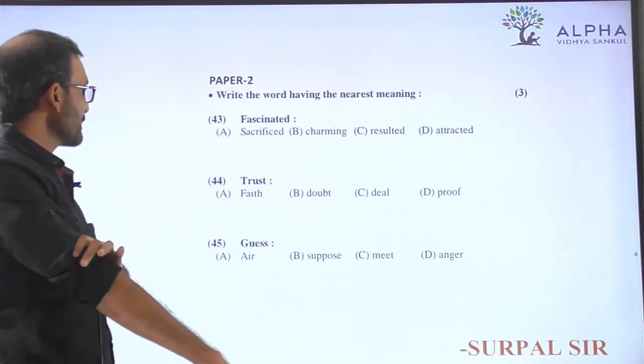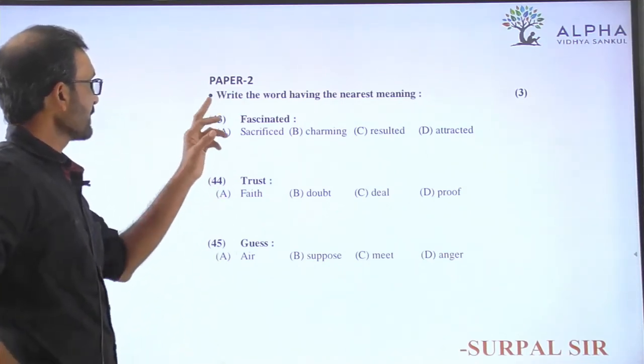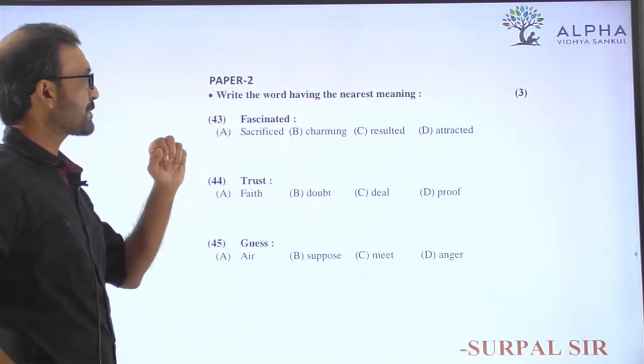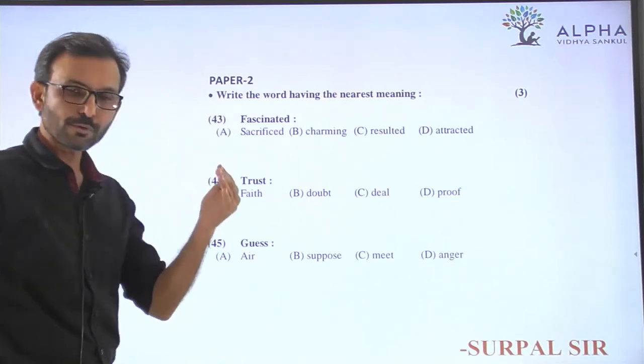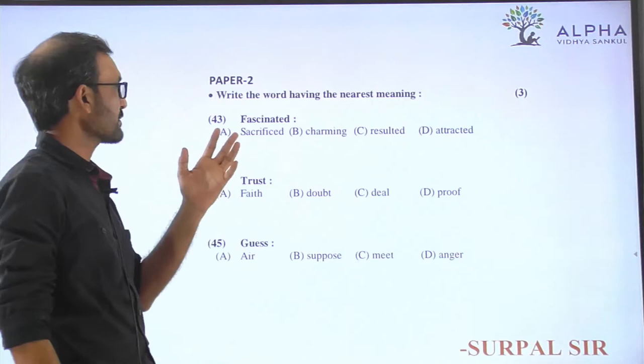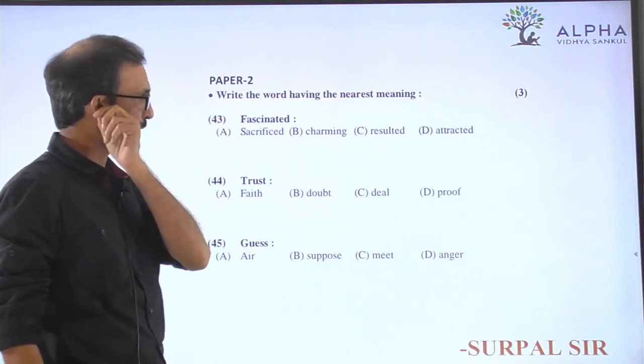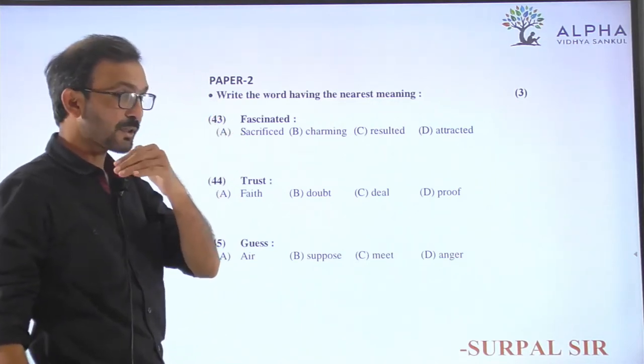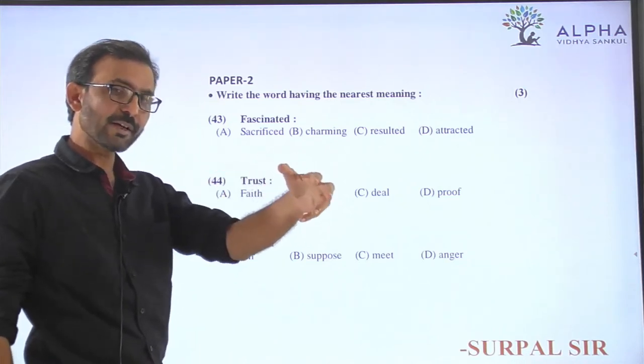Next, questions 43 to 45. Write the word having the nearest meaning, yane ke jeno najikno samanvai tato hoi. This is synonym form, yane ke total saman arthi hoi, total synonym pa na hoi se ke nearest najik pa na hoi.